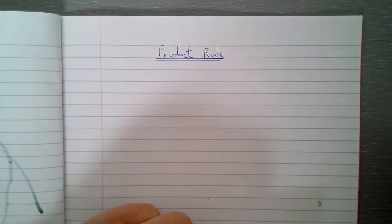So the chain rule is definitely about functions of functions. Today we're going to look at the product rule, which is a product of functions.